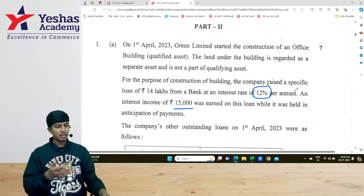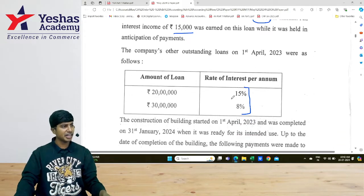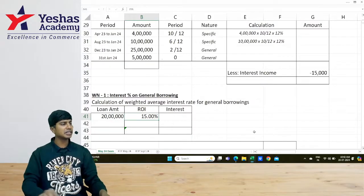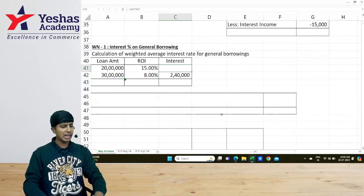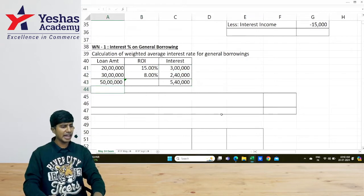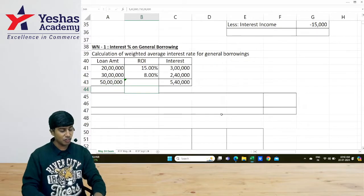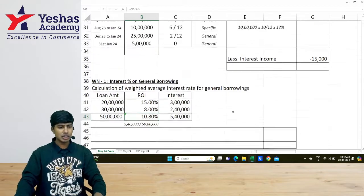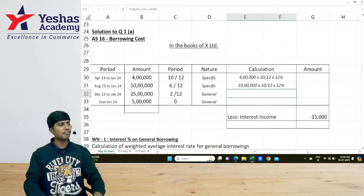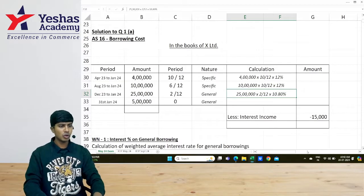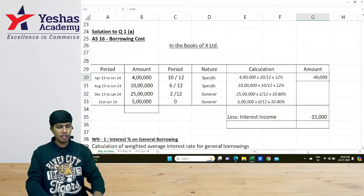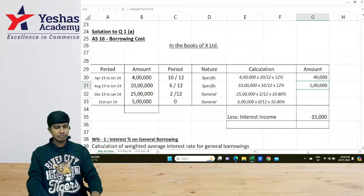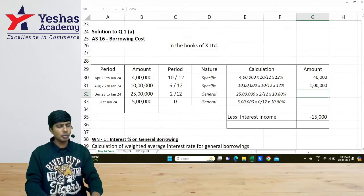Then, general borrowing, what is the interest rate? We don't know. There are 2, 15 and 8. Shall we find the average rate? ₹20,000,000 is at 15% and ₹30,000,000 is at 8%. Multiply ₹20,000,000 into 15%, ₹3,000,000 and ₹30,000,000 into 8% is ₹2,040,000. Can I say together ₹5,040,000 is the interest for ₹50,000,000? What is the average rate? ₹5,040,000 by ₹50,000,000? 10.8%. So, I would take here for this ₹25,000,000 for 2 months at 10.8%. What do I get? This is 0 anyways. ₹4,000,000 into 10 by 12 into 12% is ₹40,000. ₹10,000,000 into 10 by 12 into 12% is ₹1,00,000. And ₹25,000,000 into 2 by 12 into 10.8% is ₹45,000.